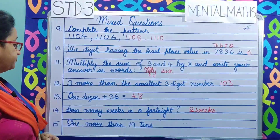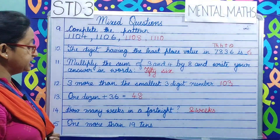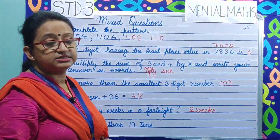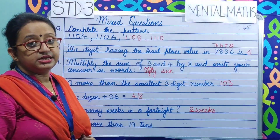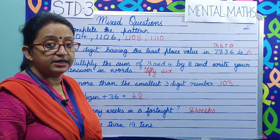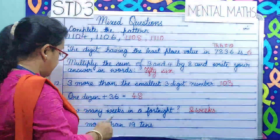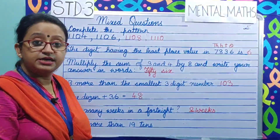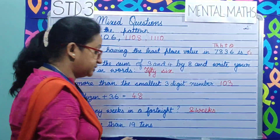Question number 15. 1 more than 19 tens. What is 19 tens? 19 multiplied by 10 makes 190. So 190 plus 1 makes it 191.